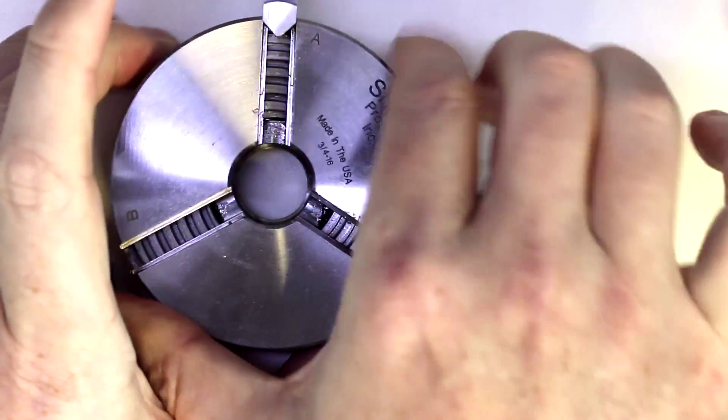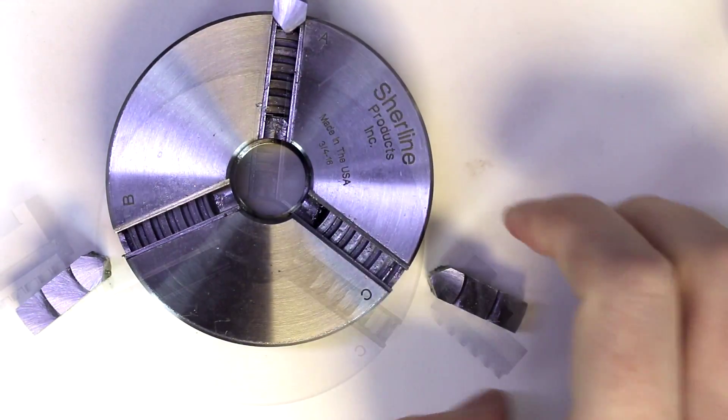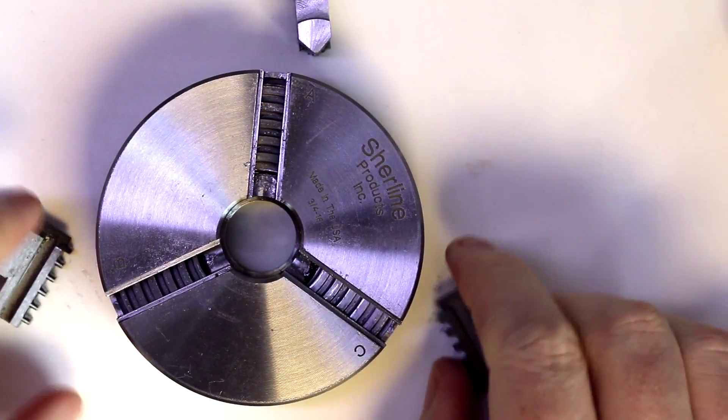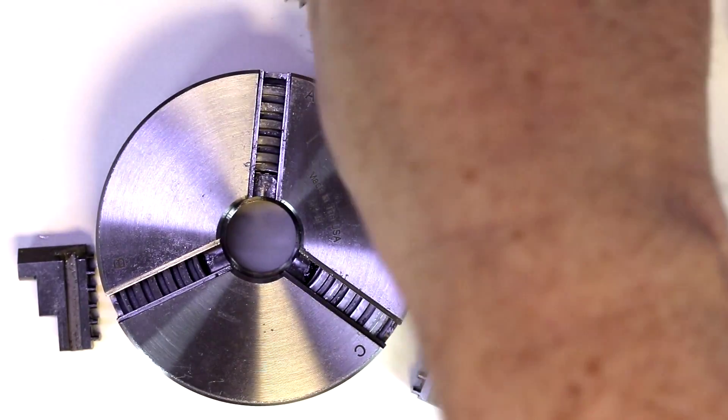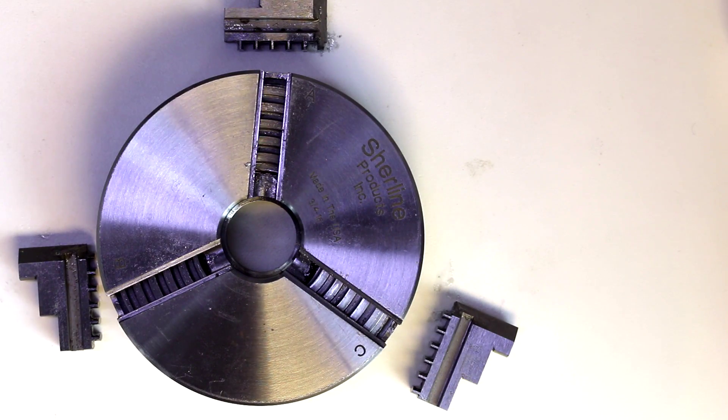We'd have to open up the chuck a little bit more to get that last jaw out. The scroll became a little bit tight as we moved out to that last step, so I did remove that off camera there. And we have all three jaws out.